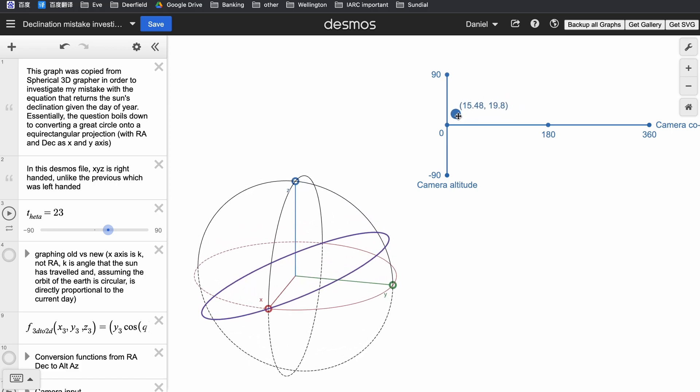My goal is to find a way to describe the right ascension and declination of the sun, given the current date. One important piece of information is to know how 0 right ascension is defined. 0 right ascension is in fact defined as exactly this point.